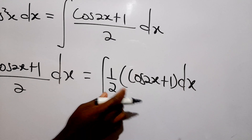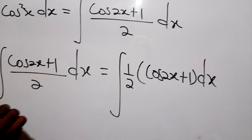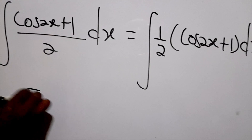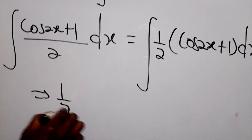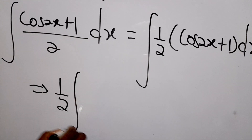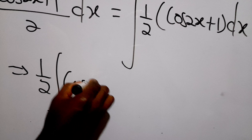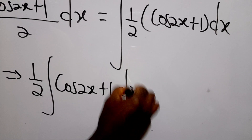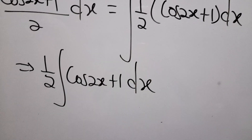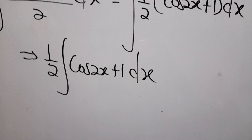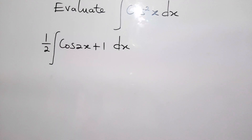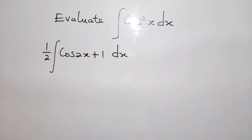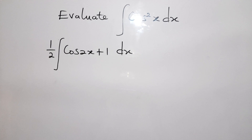We can factor out one half and say that this will be one half times the integral of (cos 2x plus 1) dx. Since we are able to decompose our problem to this level, we can easily integrate this.